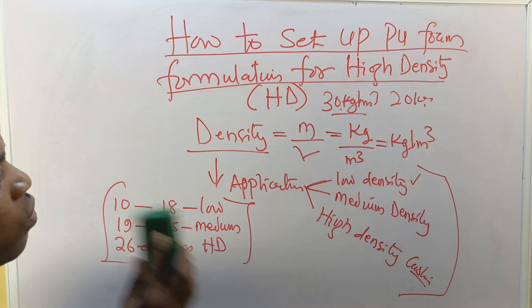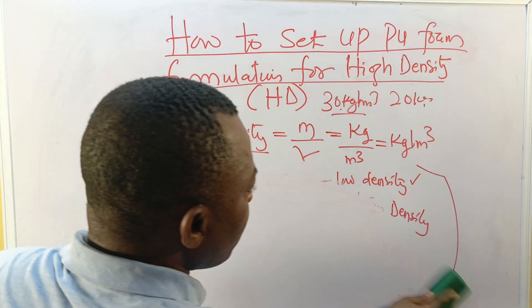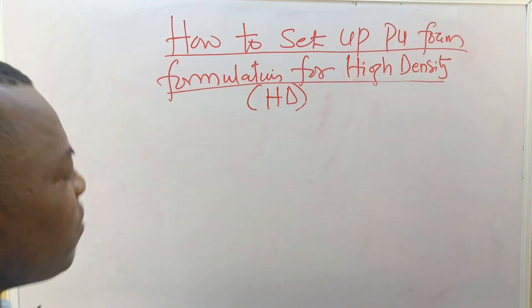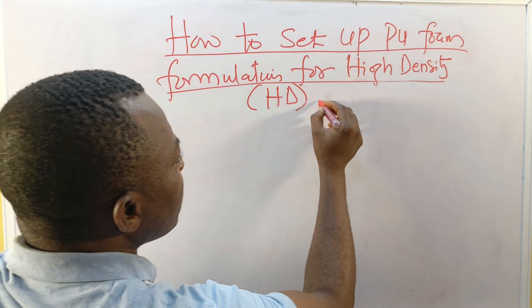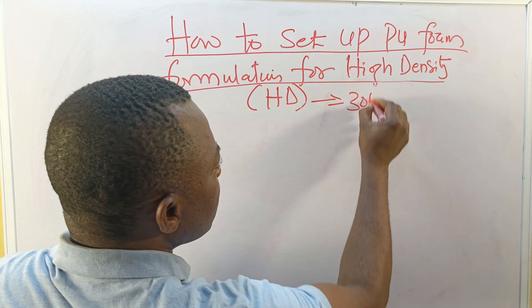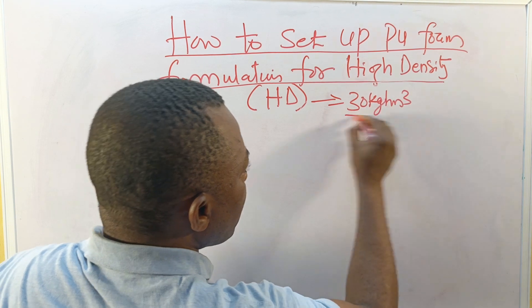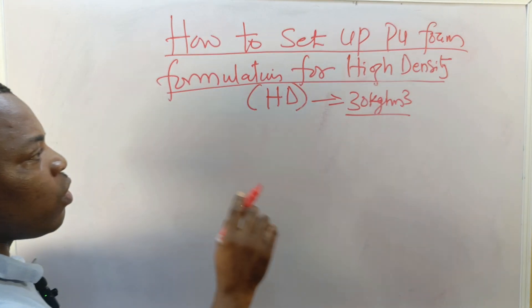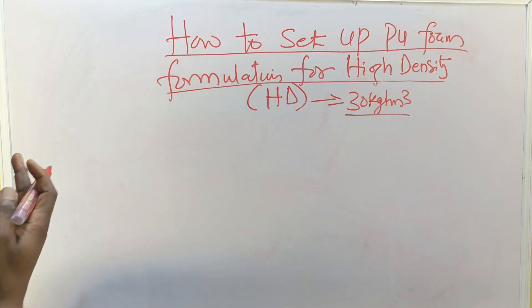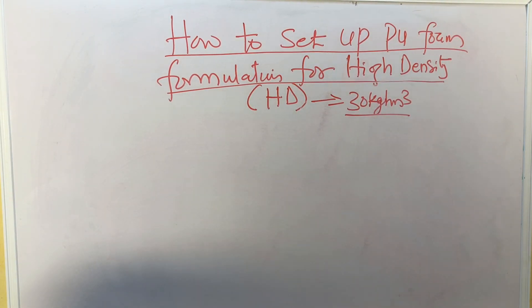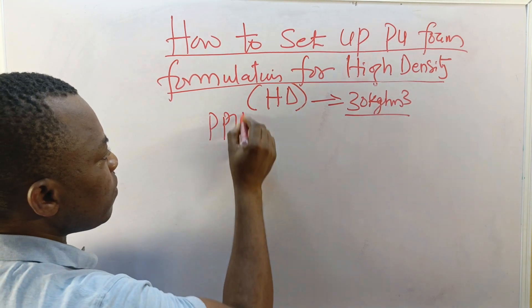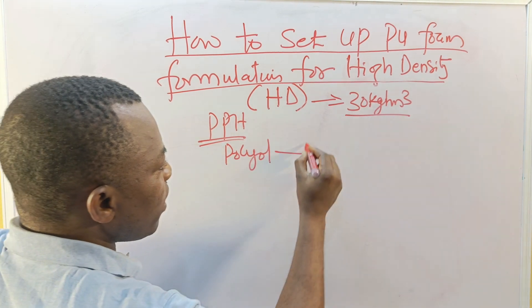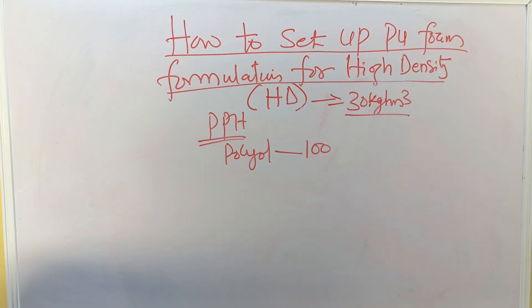In this case we are going to set up a formulation of HD. This HD I'm assuming is going to be 30 kg per meter cube. In this case I'm going to try a new thing in that we are not going to incorporate the calcium carbonate. It's going to be a virgin polyol, therefore PPH, the polyol will be 100 parts.